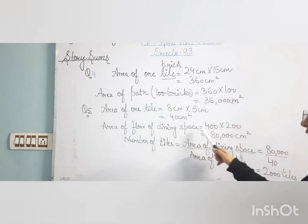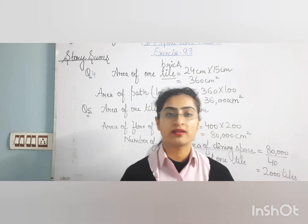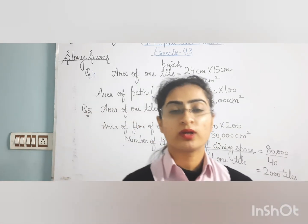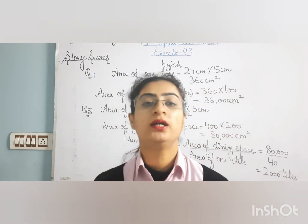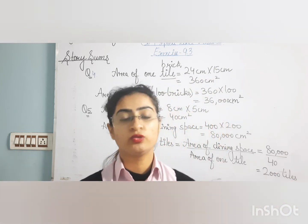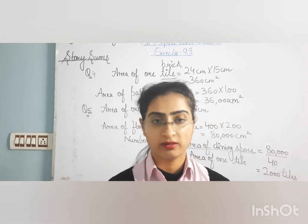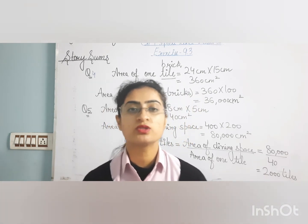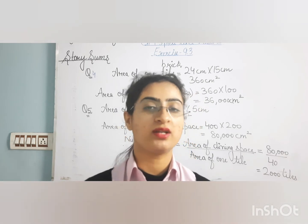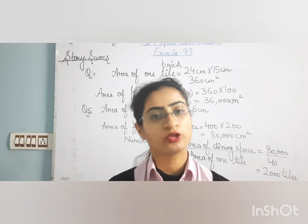To find the number of tiles needed, divide the area of the floor by the area of one tile: 80,000 divided by 40 gives 2,000 tiles. The key is to understand the statement, identify whether the shape is a square or rectangle, use the formula, and apply logic — if cost per unit is given, multiply; if you need to find the number of items, divide. Practice and you will be able to solve every question.